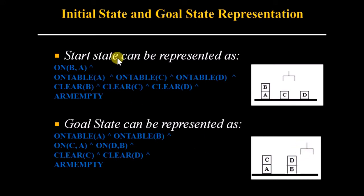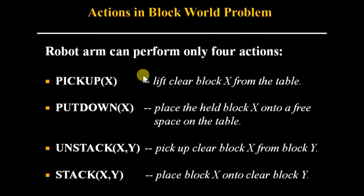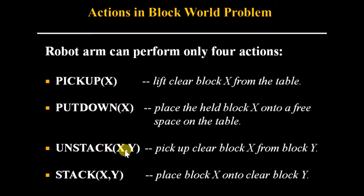We have represented the start state and the goal state. The robot arm can perform only four actions: Pick-up(x) — pick up block x from the table; Put-down(x) — keep block x on the table; Unstack(x,y) — remove block x from above block y; Stack(x,y) — put block x above block y.